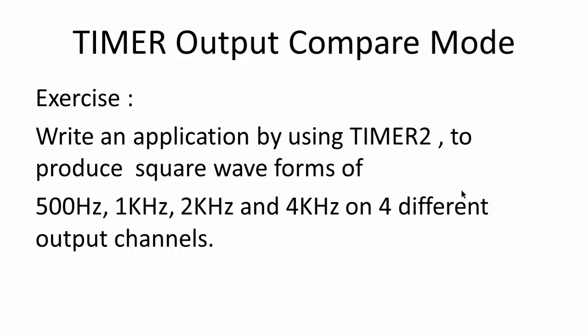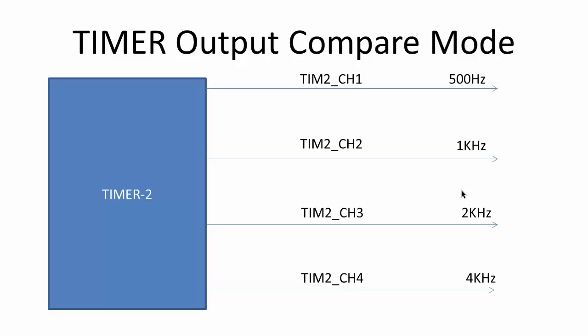We are going to understand the timer's output compare mode with an exercise, because that will be the best way to explore it instead of simply talking about theory. The exercise is: write an application using Timer 2, our general purpose timer, to produce square waveforms of 500 Hz, 1 kHz, 2 kHz, and 4 kHz on 4 different output channels.